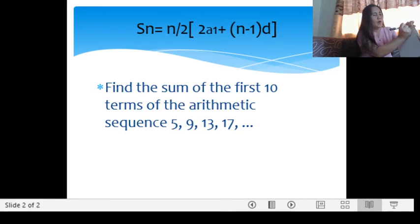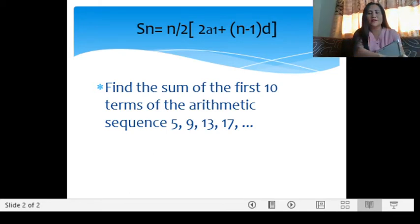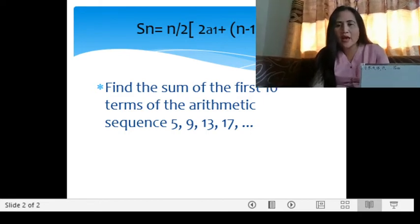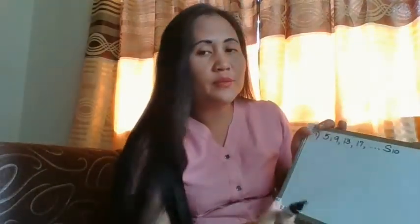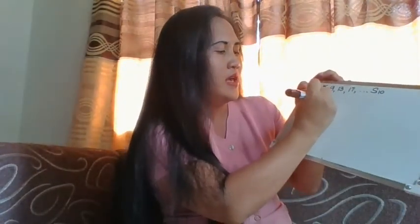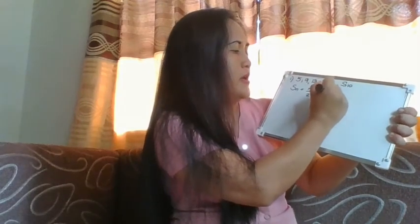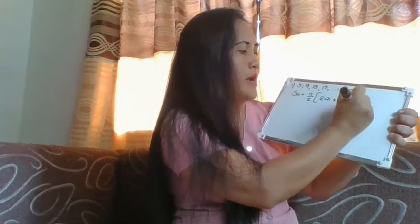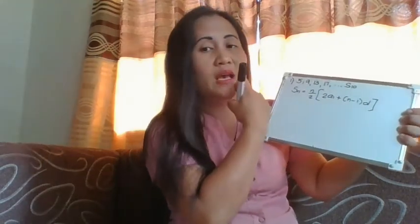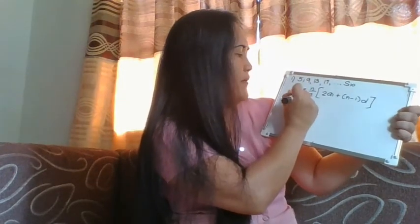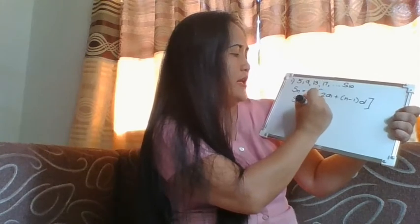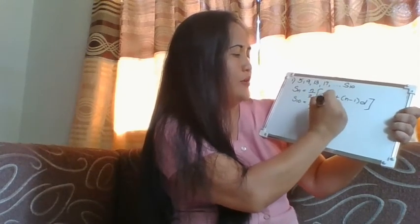Let me give an example: 5, 9, 13, 17. We are asked to find the sum of the first 10 terms. The formula for sum is S of n equals n over 2 times (2a sub 1 plus (n minus 1) times d). We substitute: n is 10, so we have 10 over 2. Our first term a sub 1 is 5.